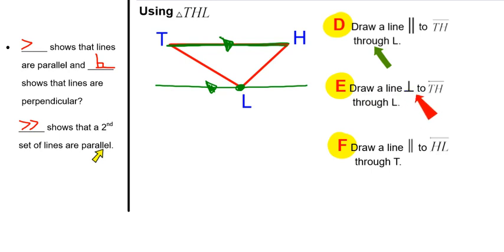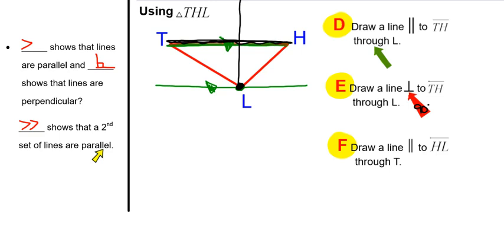The next question asks us to draw a line perpendicular to TH through L. Perpendicular means 90 degrees, so going through point L and being perpendicular to TH means the line has to go straight up. To show that it's perpendicular, you need to put a little box in the corner or write 90 degrees — you must include one of those to confirm it's perpendicular.